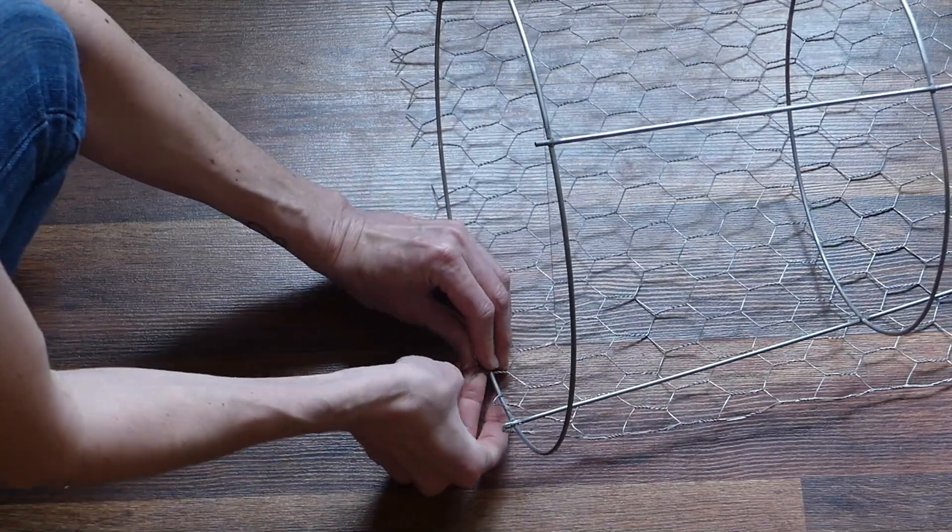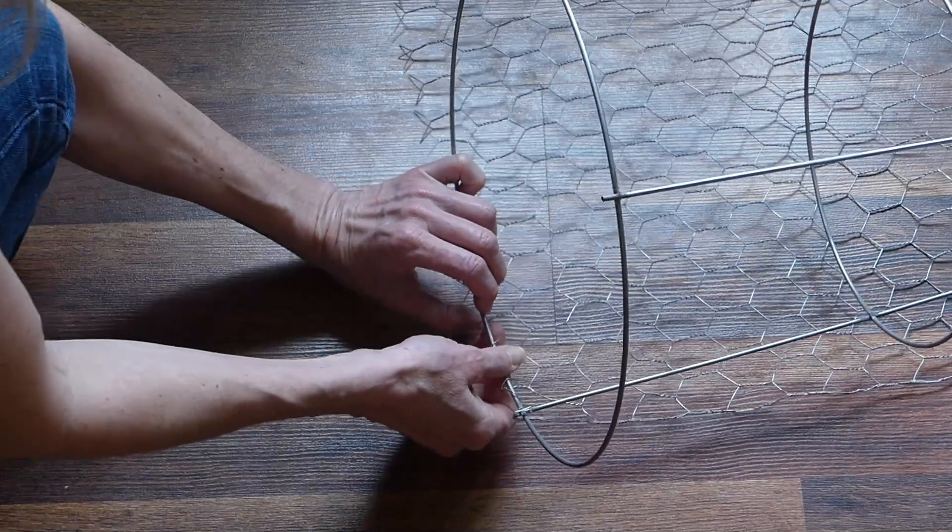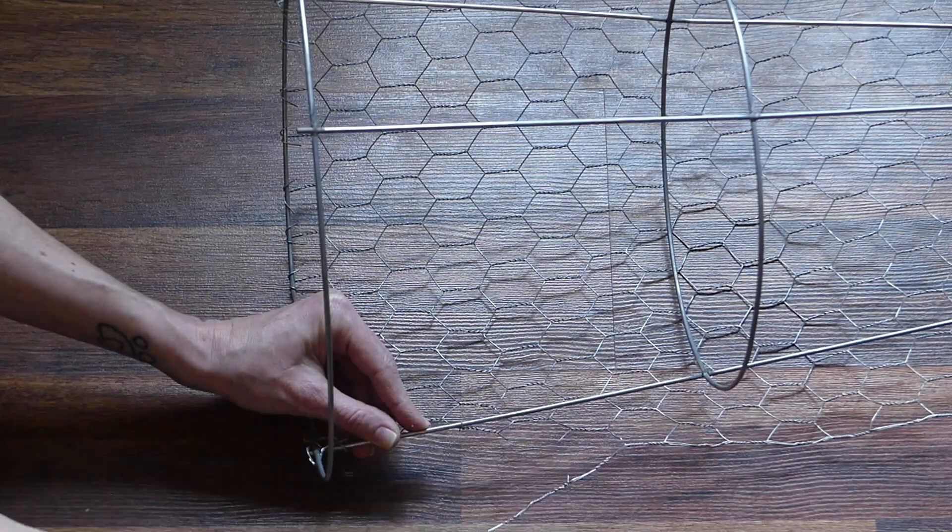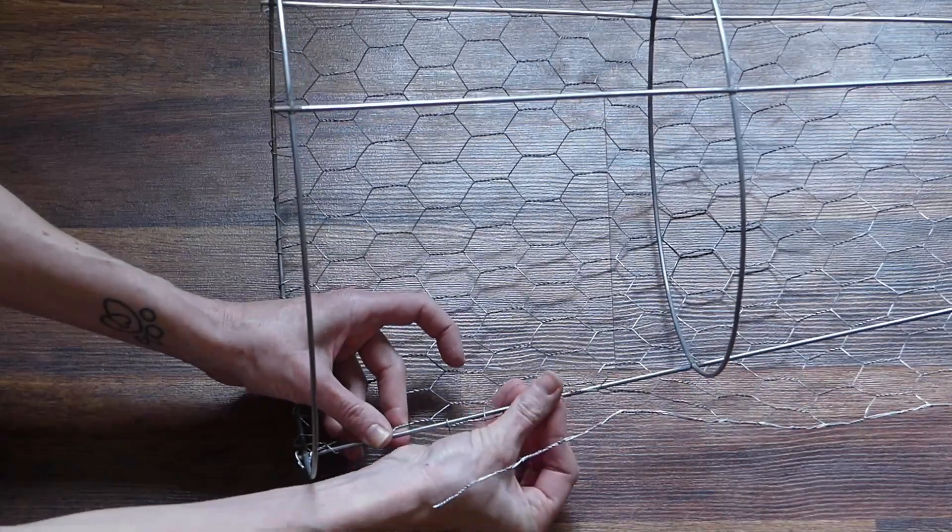Bend the bottom edge of the chicken wire under and around the bottom tier of the tomato cage. Using the wire snips, cut the chicken wire so it's slightly wider than the two vertical edges of the section. Bend the cut ends around the edges to secure.